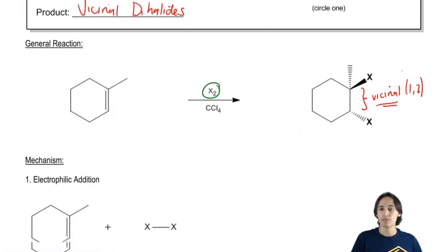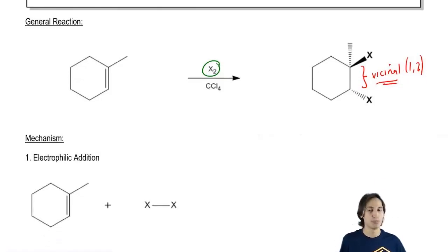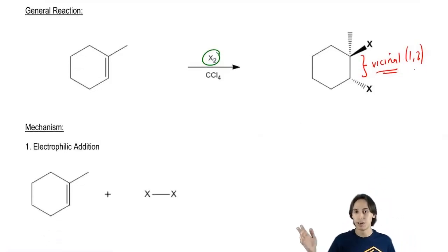So as you guys can see, the reaction looks pretty simple. We've got a double bond, so we know this is addition. We've got an electrophile that we're adding. Now notice that I have CCl4 down here.